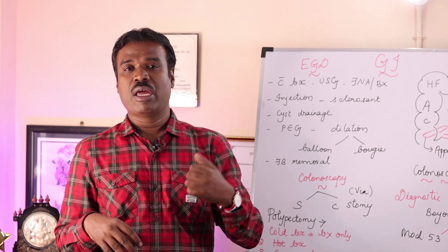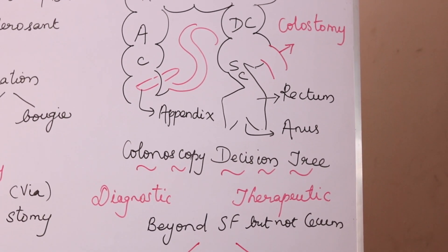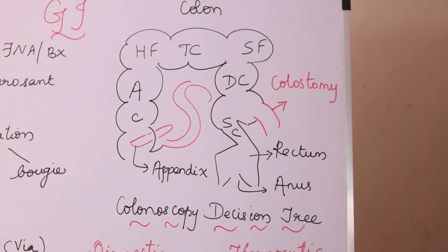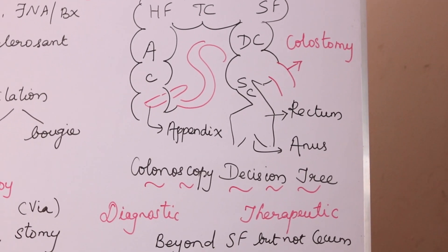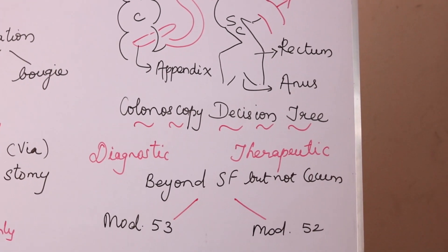So what we need to know is we need to determine what type of colonoscopy is that. Is that diagnostic or a therapeutic? And here the physician is unable to go or move the scope beyond the splenic flexure, so you would have to report that as a sigmoidoscopy.